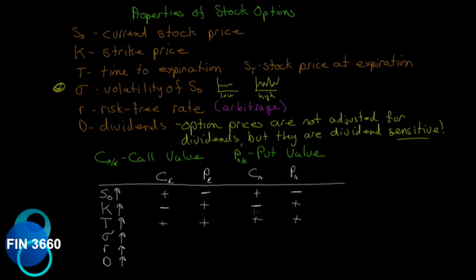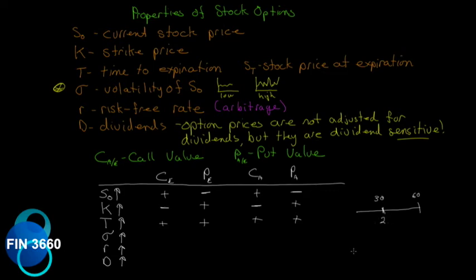Generally all option prices increase with time; however, European options only exercise on expiration, while American options can exercise anytime. The effect is clear for American options but not so clear for European ones. For example, if we're looking at a 30-day and a 60-day European option, and the 30-day is priced at $2.00, we would expect the 60-day to be priced greater than $2.00 — say $3.00 — all other things constant.